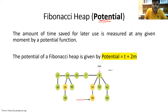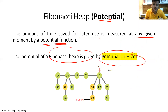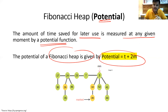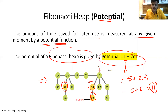An important term in Fibonacci heap is its potential. The amount of time that is saved for later use is measured at any given moment by a potential function. The potential of a Fibonacci heap is given by T plus 2M, where T is the number of trees and M is the number of marked nodes. For this Fibonacci heap, T equals 5 and M equals 3, so the potential is 5 plus 2 times 3, which equals 11.